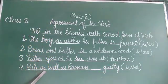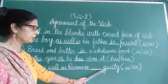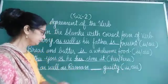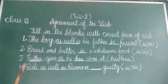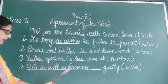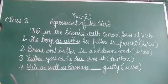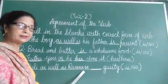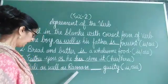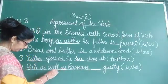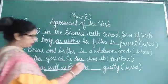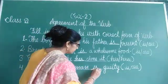Next is: Bali as well as Raman __ guilty. The options are 'is' and 'are'. Again the rule is, if two subjects are joined with 'as well as', here we are getting two subjects - Bali and Raman - both joined with 'as well as'. Then accordingly we will put the helping verb in singular form.